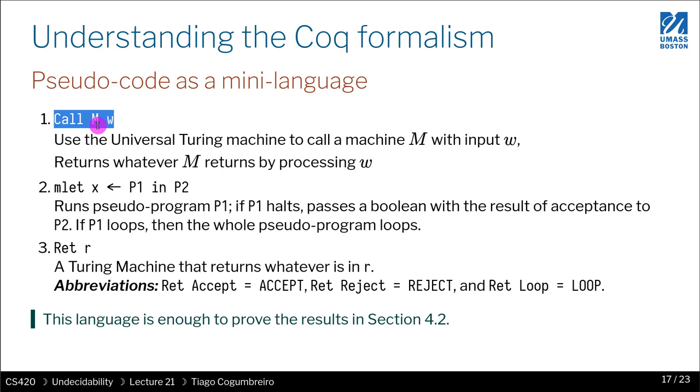Another thing you're gonna see is this M let construct, and the M let construct is you're gonna run something on the right-hand side of the arrow. It's kind of like an assignment where you're gonna run P1 followed by P2. You're gonna execute some program—when I say a program, it's pseudo-code in this mini-language. This would be something, for instance, calling this Turing machine that represents P1, and then you're gonna assign the result of that to X.